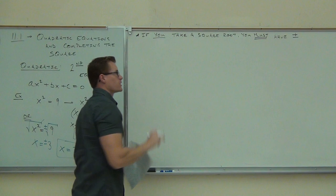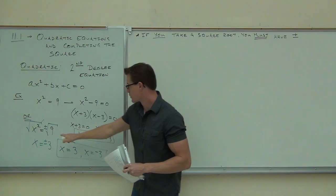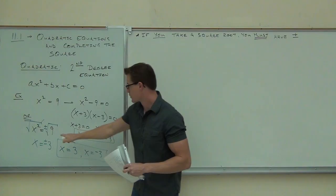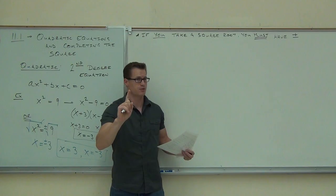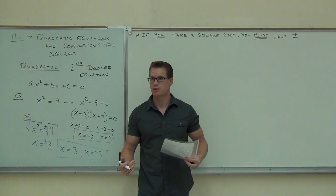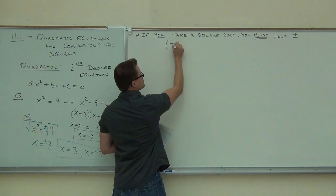If you take the square root, you must have plus or minus. This gives you your two solutions. If you don't have it, you'd only get one solution — positive three, not negative three. You don't even have it half right. When you include the plus or minus, you're going to get two solutions: one positive, one negative.